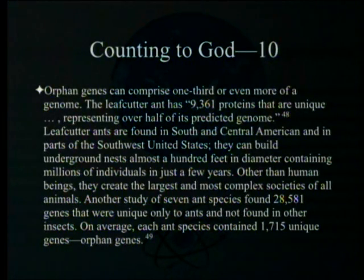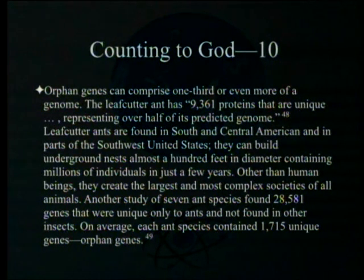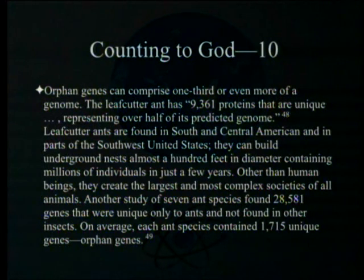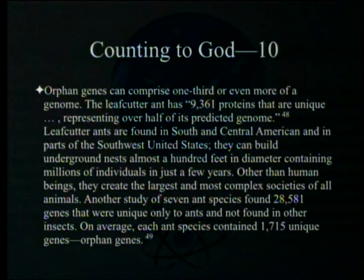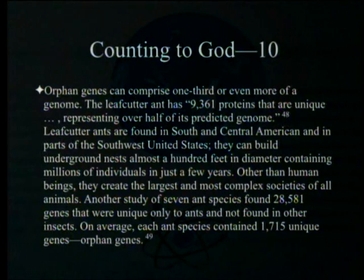Orphan genes can comprise one-third or even more of a genome. The leafcutter ant has 9,361 proteins that are unique, representing over half of its predicted genome. Leafcutter ants build underground nests almost 100 feet in diameter containing millions of individuals. Other than human beings, they create the largest and most complex societies of all animals. A study of seven ant species found 28,581 genes unique only to ants and not found in other insects. On average, each ant species contains 1,715 unique orphan genes.